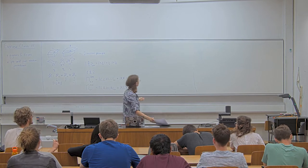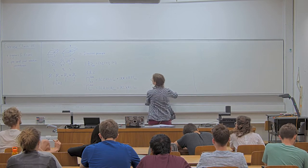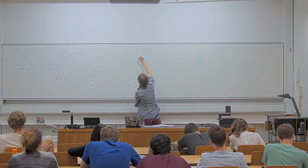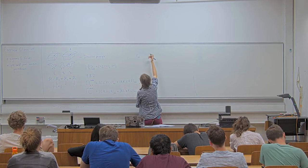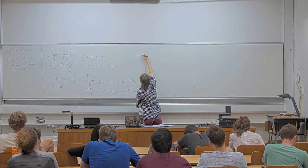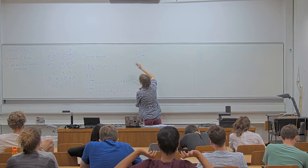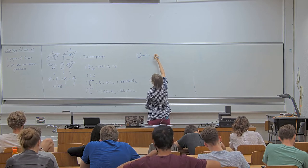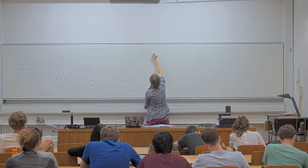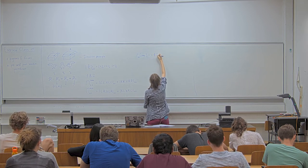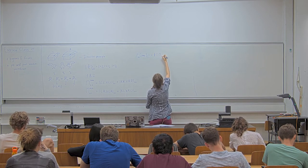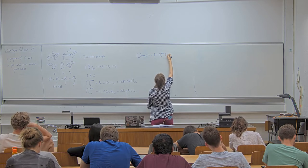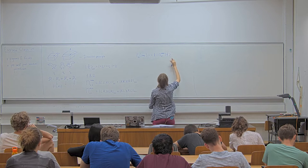My first statement, which I already made, is that the probability to find particles one and two in the same box, given this state, is non-zero. Basically what we need to calculate is phi times the projector corresponding to being in the same box, times phi.